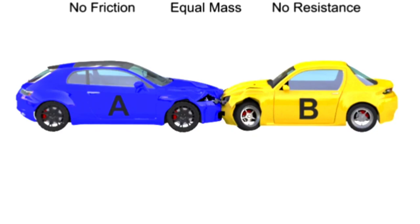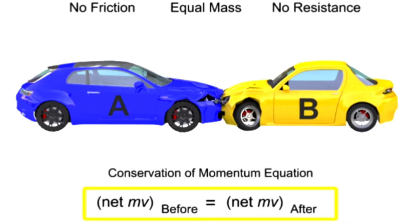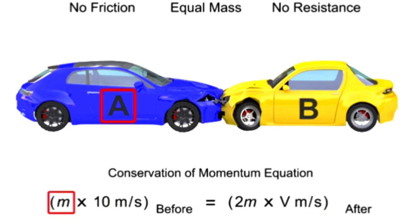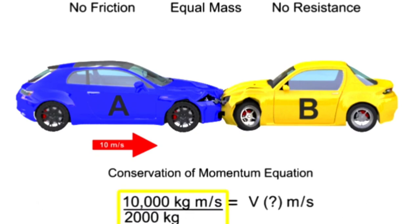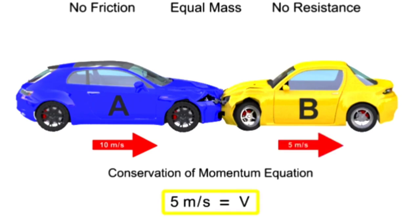The after-collision momentum is easily calculated using the conservation of momentum equation, where the mass of car A times its speed of 10 meters per second before the collision is equal to the mass of car A plus the mass of car B times the final velocity after the collision. Rearranging the equation to solve for the velocity after the collision gives 5 meters per second.